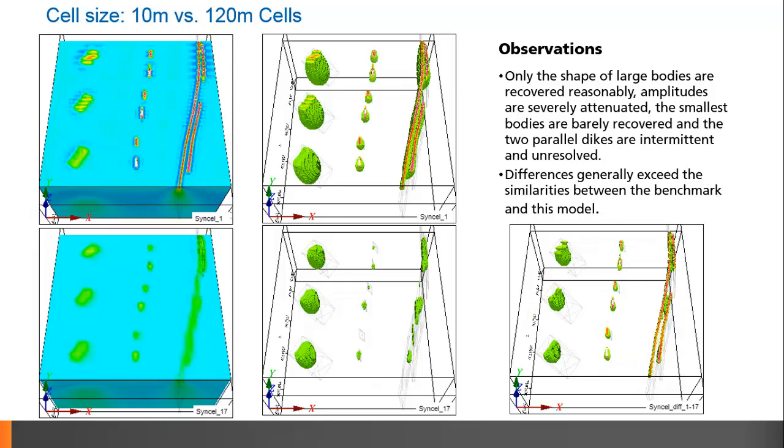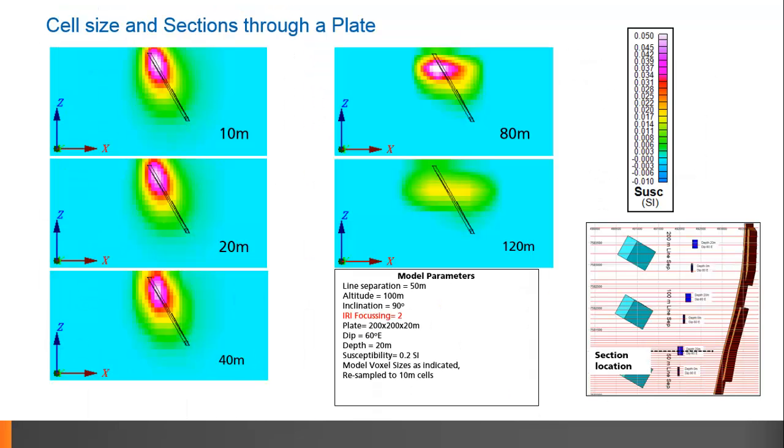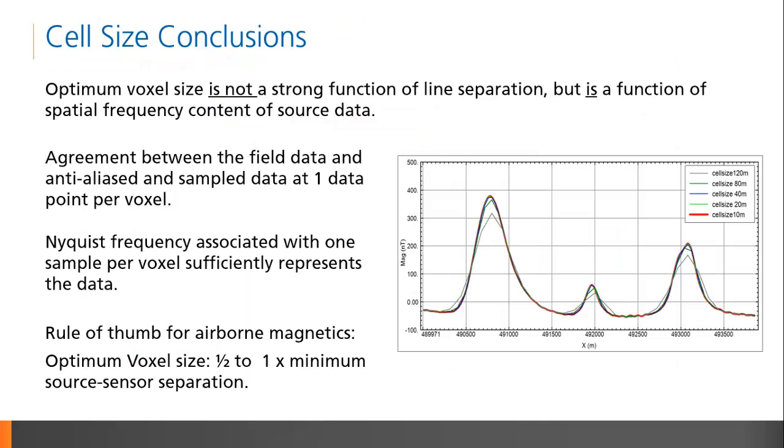Most interestingly, we note that the difference between the models is not really affected by the increasing line separation to the north. This indicates that optimum cell size is not really a function of the line spacing, but rather a function of the source sensor spacing. If we look at a cross-sectional slice through one of our dipping plates, you'll note that there is very little difference in your resulting interpretation as you increase the cell size from 10 to 40 meters.